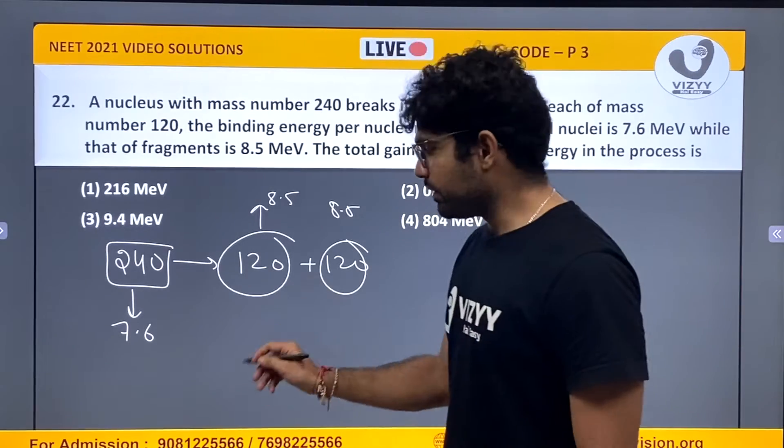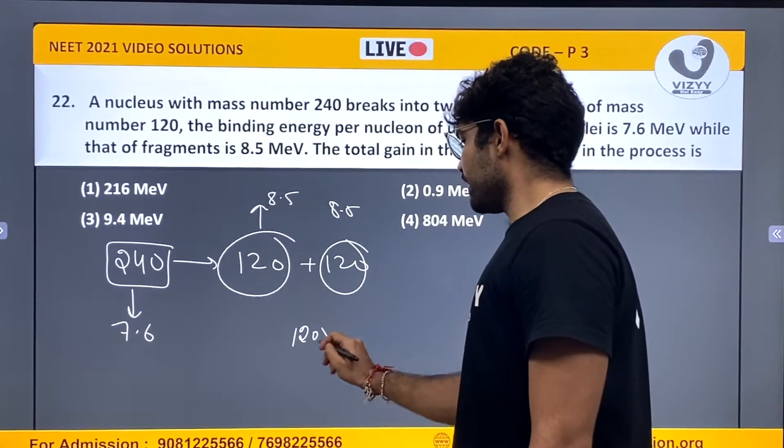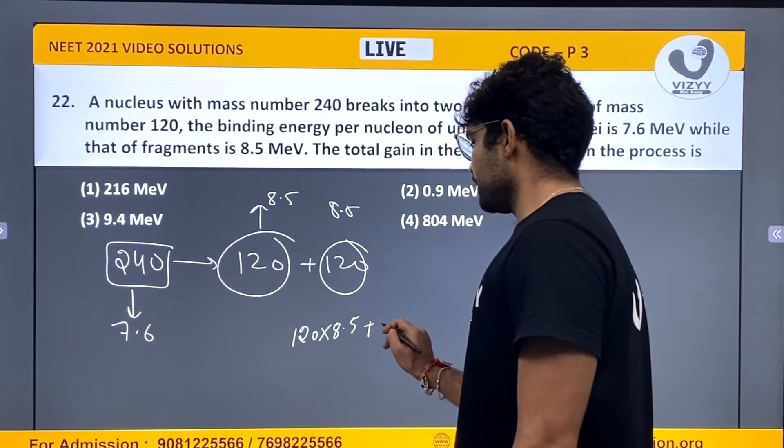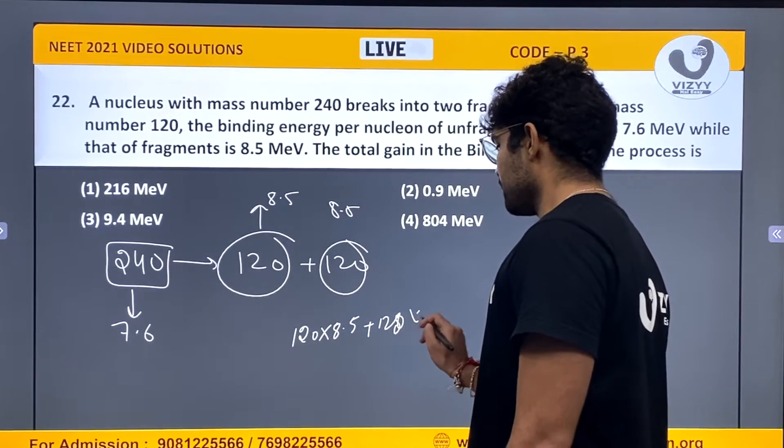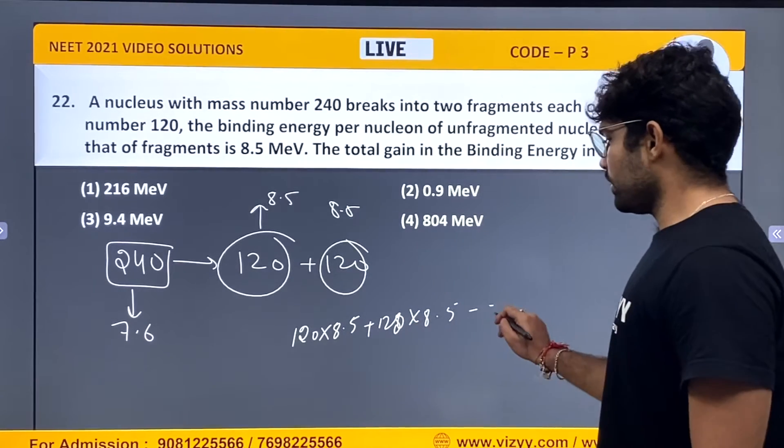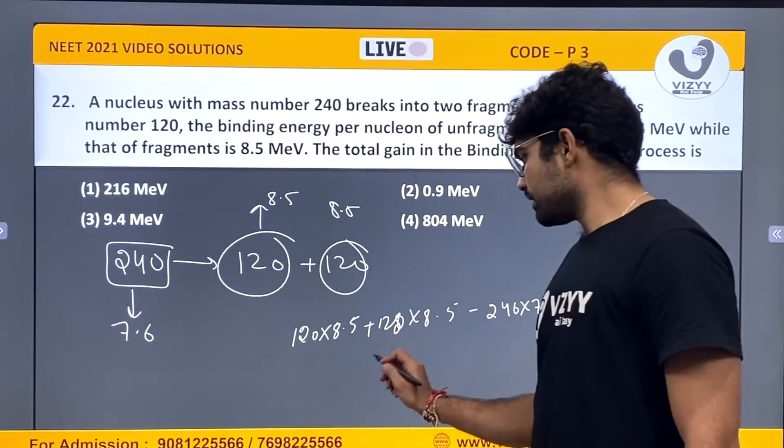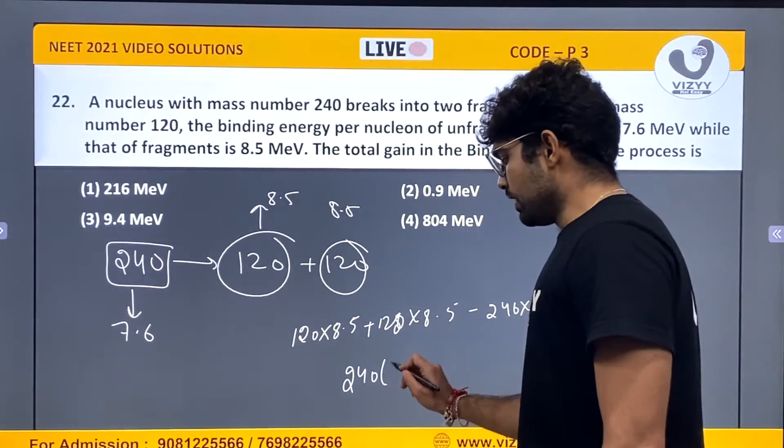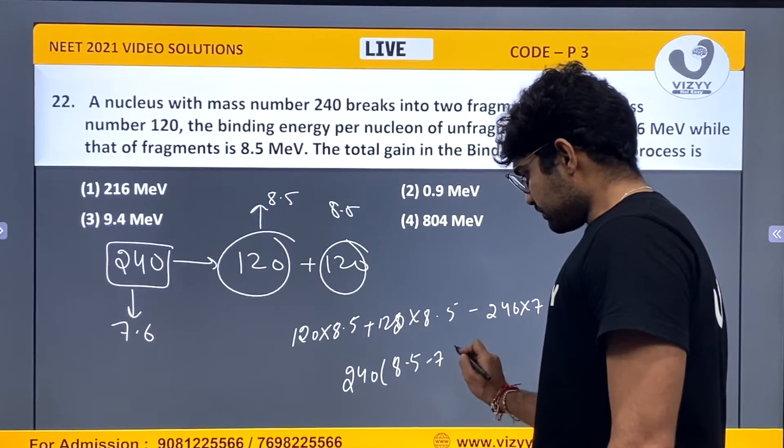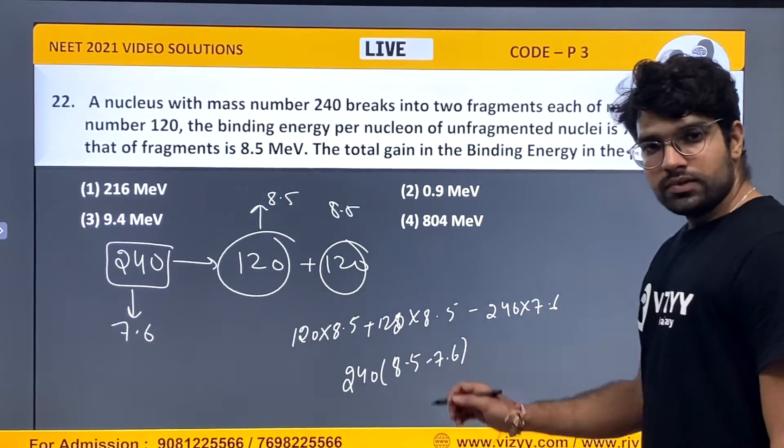Binding energy in product will be 120 into 8.5 plus 120 into 8.5 minus 240 into 7.6. This is the gain in binding energy. What will happen? 240 into 8.5 minus 7.6.